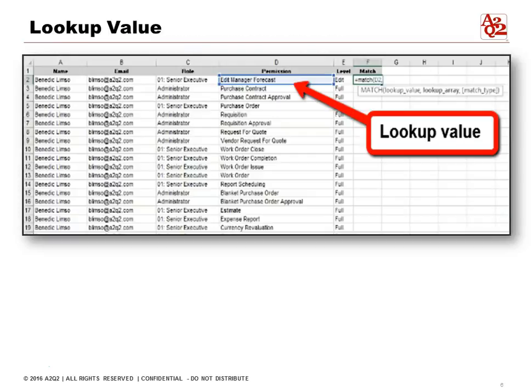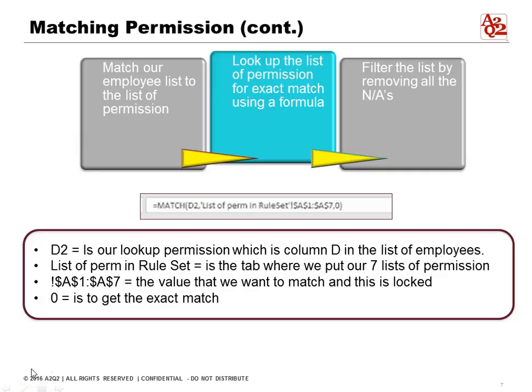Next we're going to look at the permissions and do a lookup value — here's what the formula looks like. D2 equals our lookup permission, which is column D in the list of employees. The list of permissions in the rule set is the tab where we put our seven non-repeating permissions. The data range is the value we want to match, that range is locked, and zero means we want an exact match.